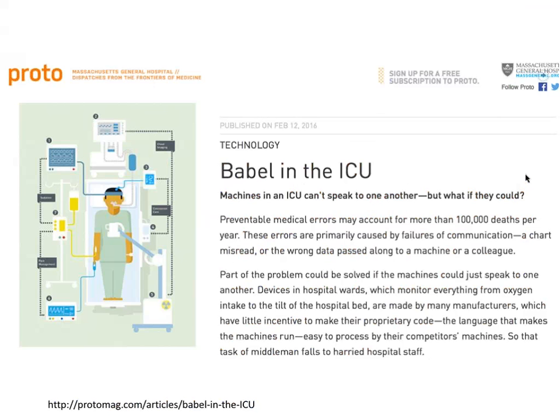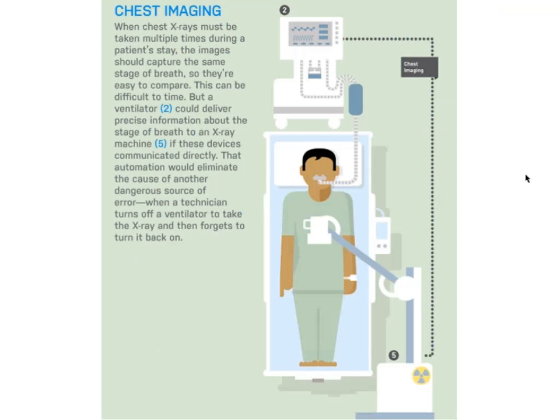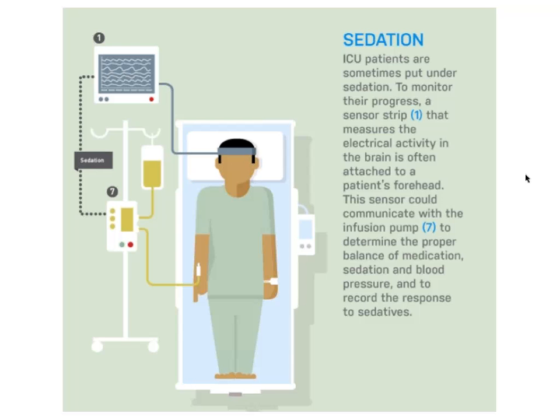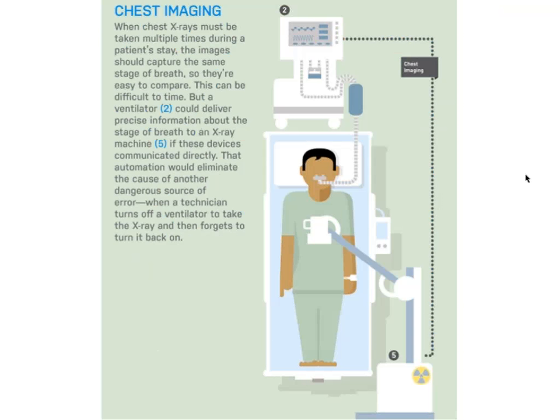Additional examples can be found online — these are from this month's Proto Magazine, entitled 'Babel in the ICU.' One example is a sedation use case and a chest imaging use case. We can improve the safety of X-ray imaging by synchronizing ventilation and X-rays to improve the quality of images and improve patient safety. Another example is improving care for brain injury patients by considering the relationship between head of bed position and intracranial pressure or other monitors.